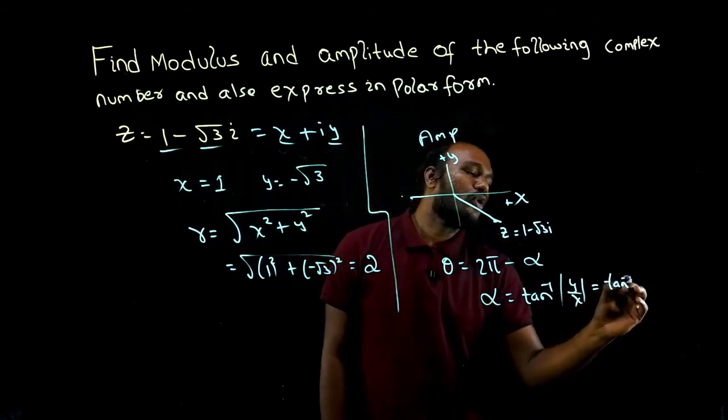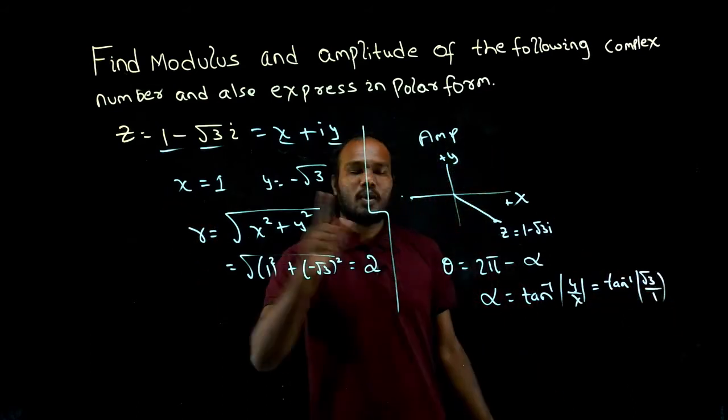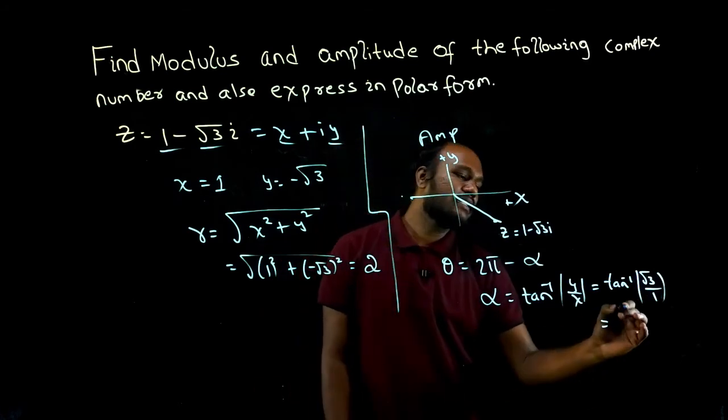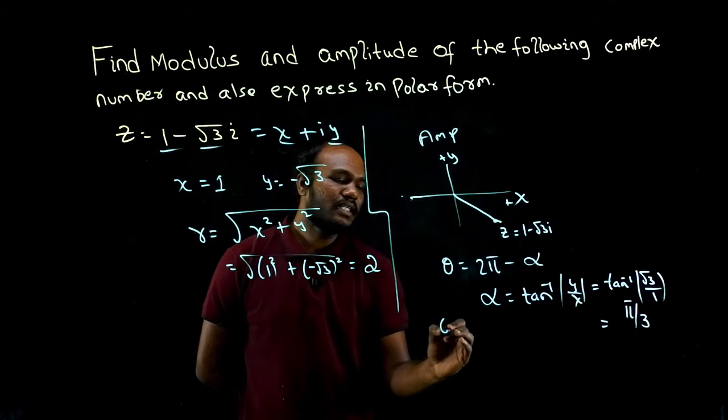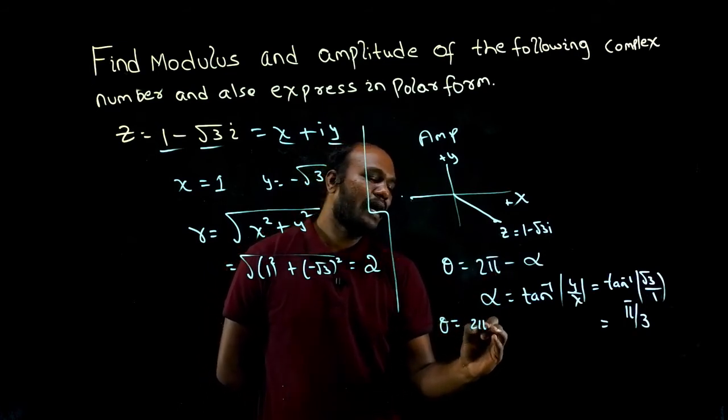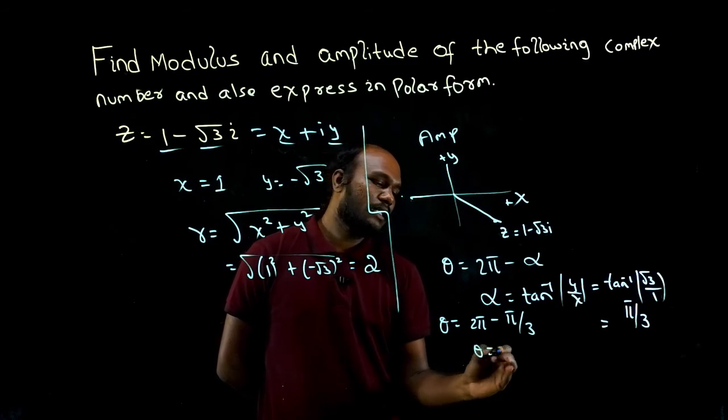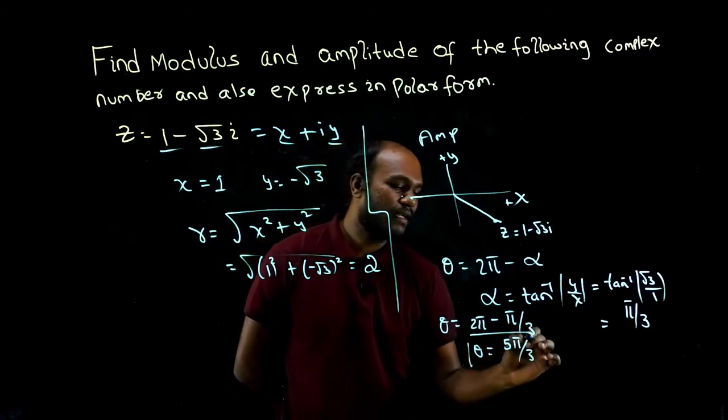Alpha is tan inverse of mod y upon mod x. We only take positive numbers. So tan inverse of root 3 upon 1. That's 60 degrees, which is π over 3. So theta is 2π minus π over 3, which is 5π upon 3.